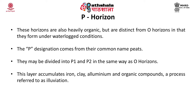Another horizon is the P-horizon. These horizons are also heavily organic but are distinct from the O-horizon in that they form under waterlogged conditions only. The P designation comes from their common name Peats. They may be divided into P-1 and P-2 in the same way as the O-horizon. This layer accumulates iron, clay, aluminium and organic compounds, a process referred to as illuviation.